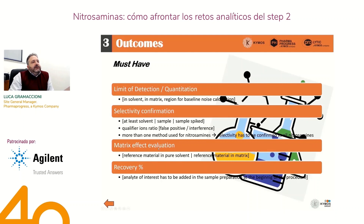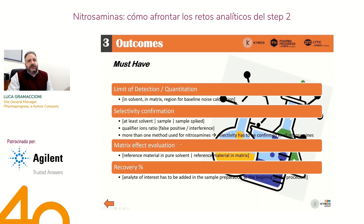This is important to give an idea of the robustness of the results obtained in the samples. And at least the percentage of recovery, in order to demonstrate that the method has the possibility to recover all the analyte of interest present in the sample, or at least an acceptable percentage. All these parameters give robustness to the results delivered to the regulatory authorities, and therefore it is important that they are included in the final report delivered by the CRO.